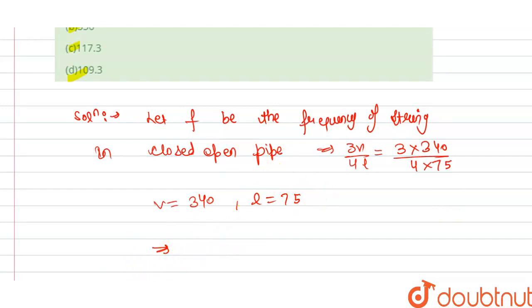n equals: we get the frequency f in the closed-open pipe. This will be equal to 3 × 340 divided by 4 × 75. On solving this, we get this is equal to 340 hertz.